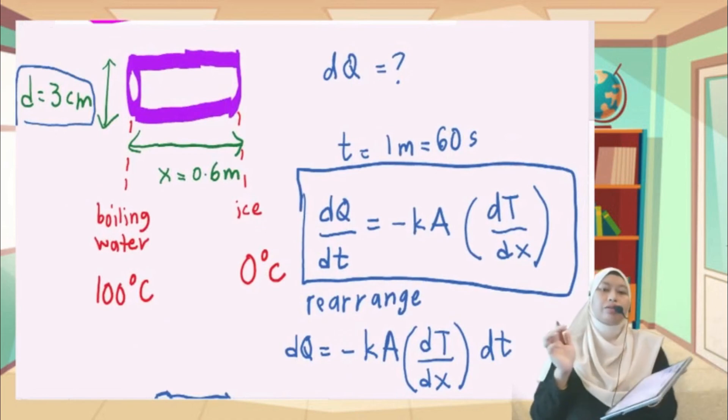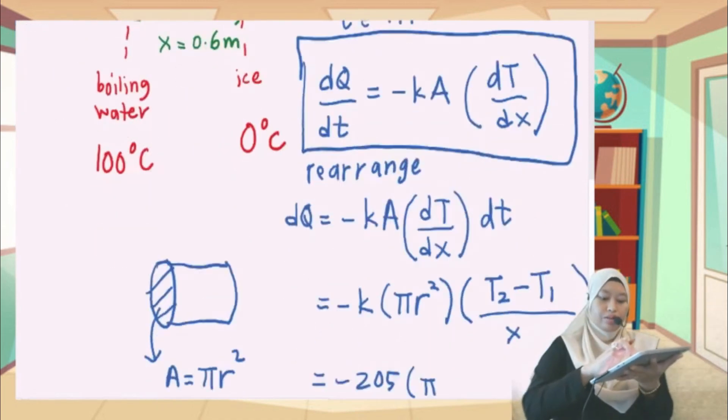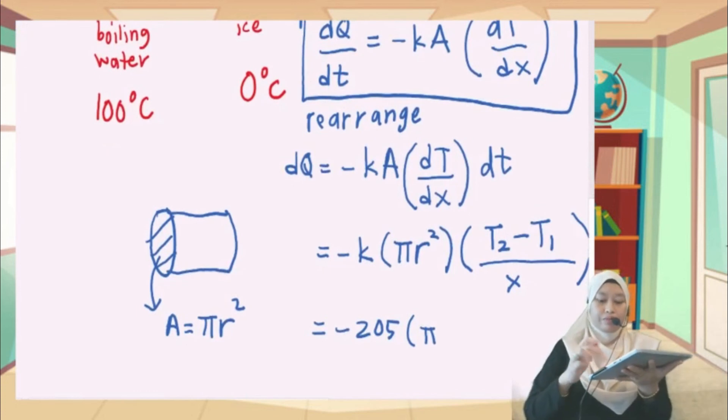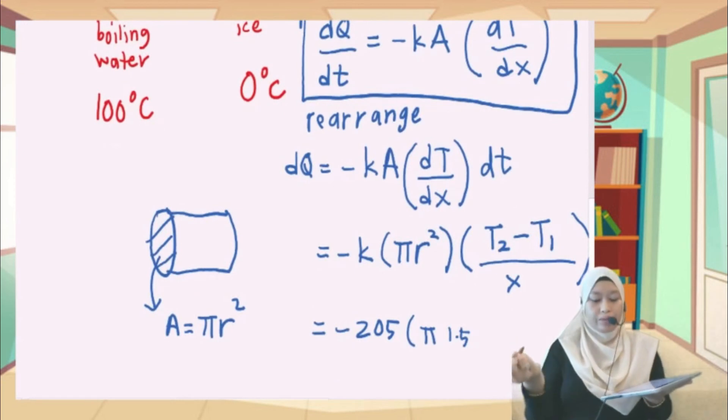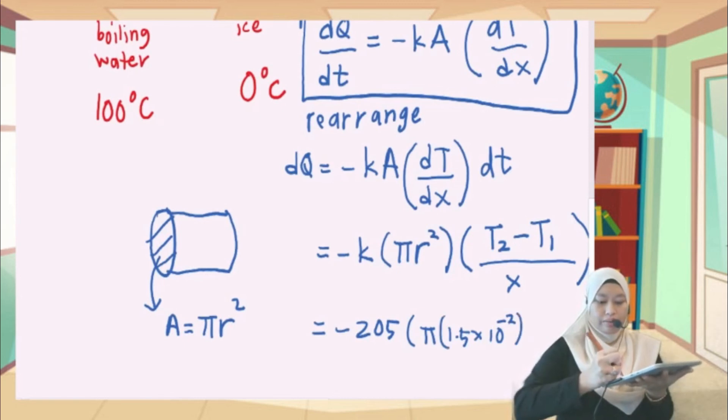So in order to find r, just divide 3 cm by 2. So we've got 1.5. 1.5 is in cm, we want it in meters, so times it with 10 to minus 2. Don't forget the square.